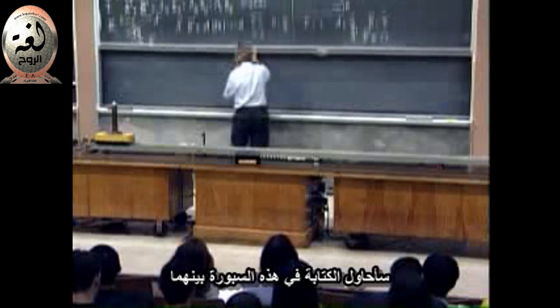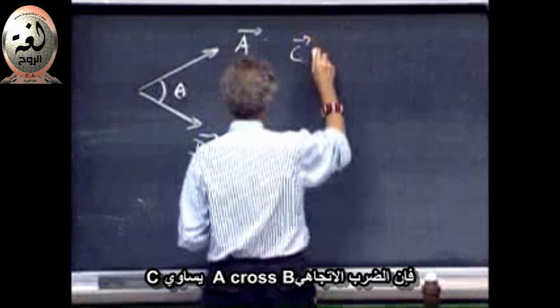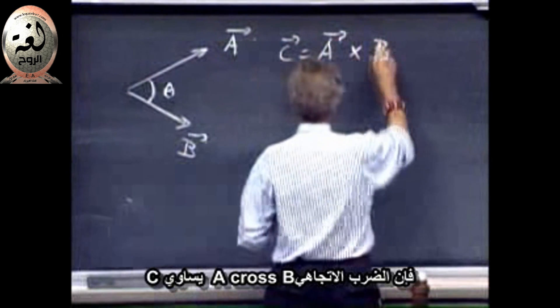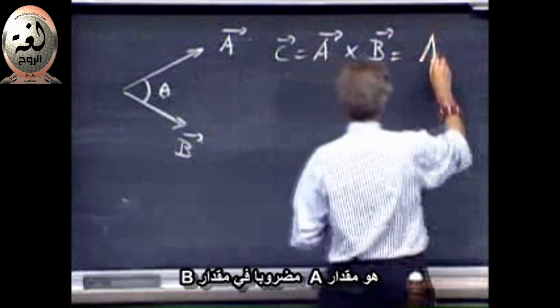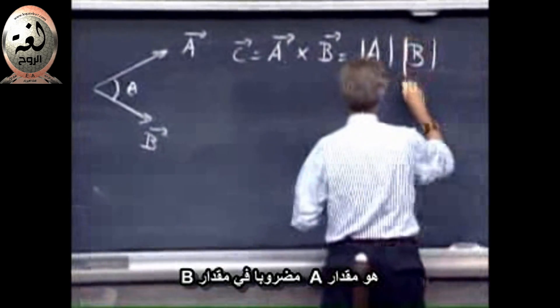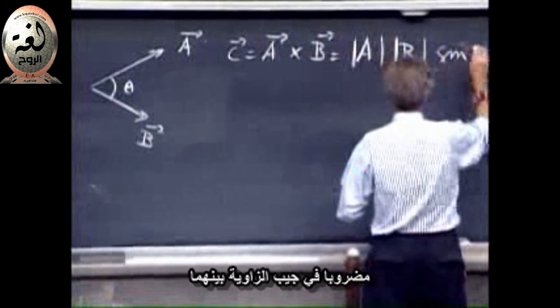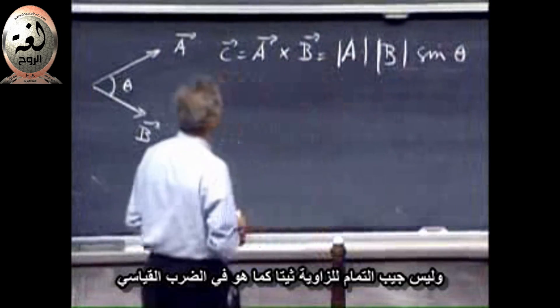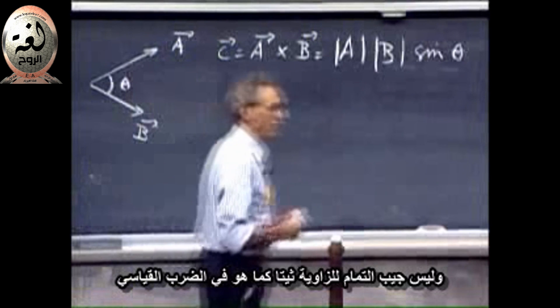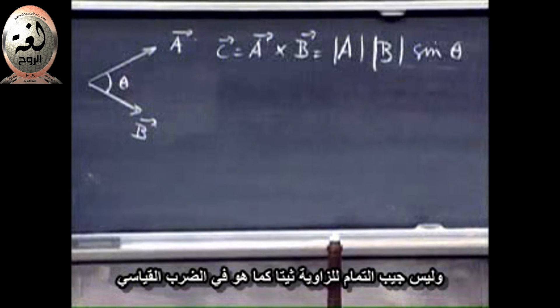Let me try to work on this board in between. If you know vector A and you know vector B and you know that the angle is theta, then the cross product C equals A cross B is the magnitude of A times the magnitude of B times the sine of theta. Not the cosine of theta as we had before. It was a dot product. It is the sine of theta.